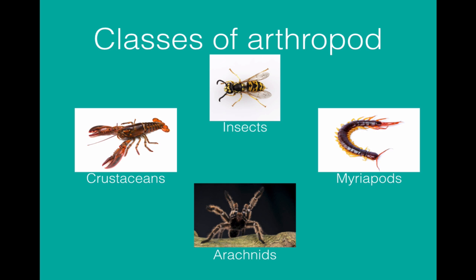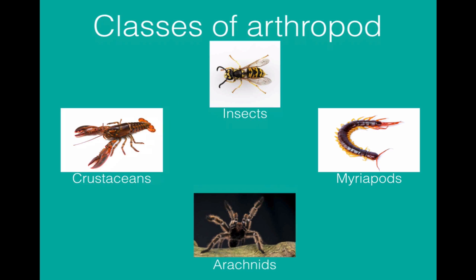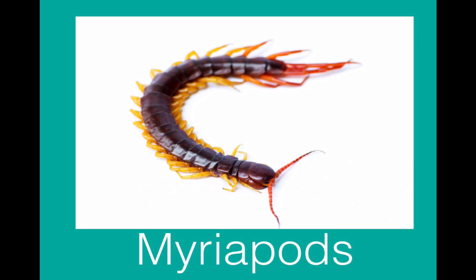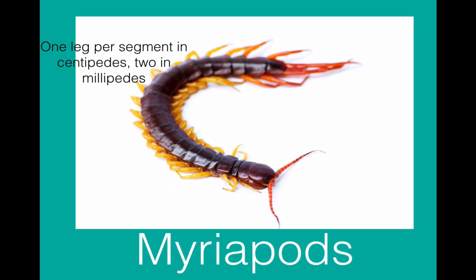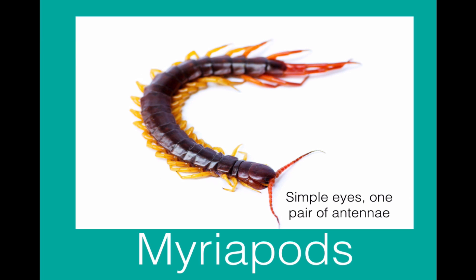The second class of arthropods are the myriopods, which include millipedes and centipedes. They consist of many segments — a head segment, a tail segment, and intermediate abdominal segments that are all virtually identical, each with legs. One pair of legs per segment makes it a centipede; two pairs makes it a millipede. They have simple eyes rather than compound eyes, and they have a single pair of antennae.